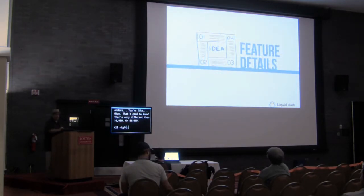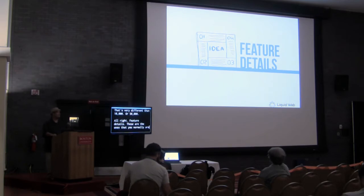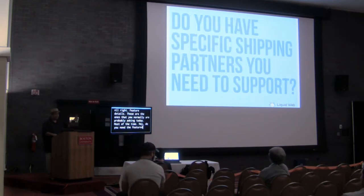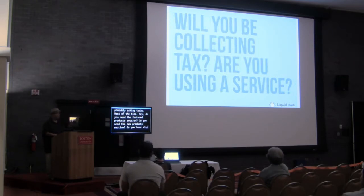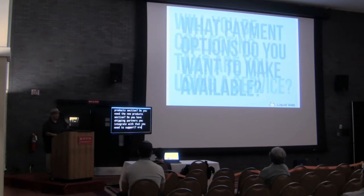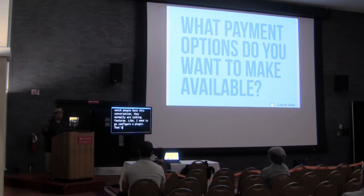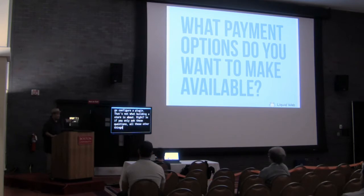Feature details are the questions you're probably already asking: Do you need a featured products section? A new products section? Do you have shipping partners to integrate with? Are you collecting tax — are you using a service? What payment options do you want? These are the questions I see people normally discussing — talking features, configuring plugins. But if you only ask these, all those other things haven't been asked about.